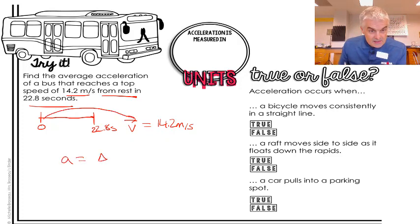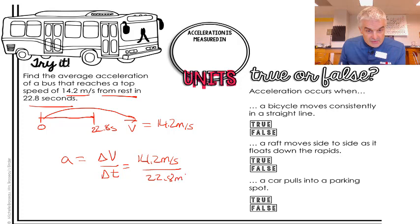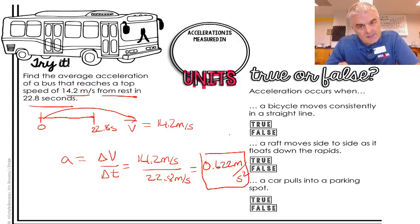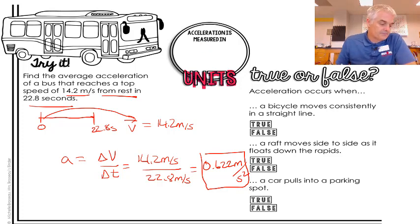So acceleration is delta V over delta T, which would be 14.2 meters per second, divided by 22.8 meters per second. I get my calculator out, and I take 14.2 divided by 22.8, and I get 0.622 meters per second squared. Now let's explain what that means. That means that every second, my bus is going 0.62 meters per second more. After one second, I'm going 0.62. After two seconds, I'm going 1.2. After three seconds, it's 1.8. You just keep adding 0.6 for every second. All right? And I think we should probably fill this in. It's meters per second squared.